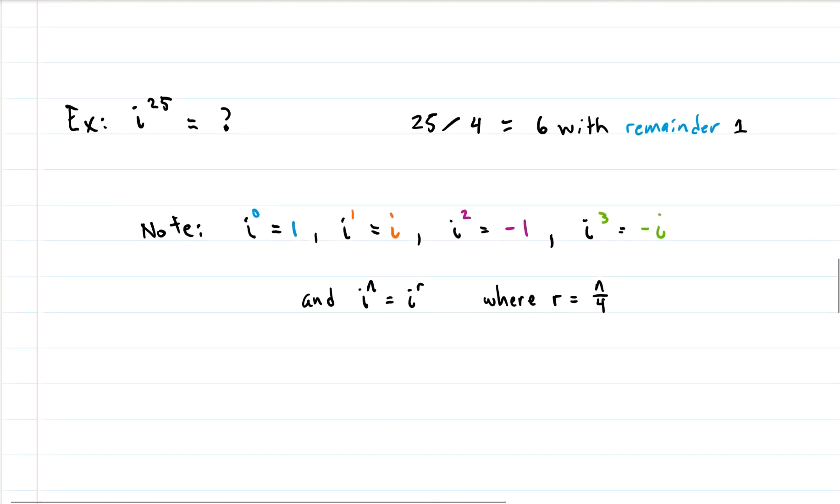Let's try an example: i to the 25. I really don't want to multiply i by itself 25 times to figure out what this is, so I'm going to use that little trick. We divide 25 by 4, and that gives us 6 with remainder 1. So all we really need to do is remember this first line and that will give us everything. We know that i to the 25 is the same thing as i to the first power because that's the remainder when we divide 25 by 4, which just gives us i. So i to the 25 is just the same thing as i. Pretty easy, huh?